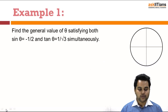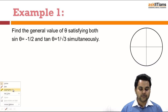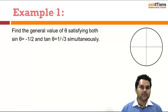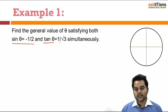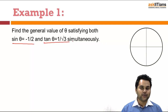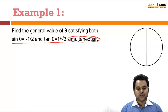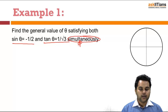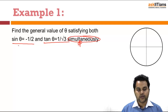Let's start with some examples based on the concepts that we have just learnt. The first example is that we have to find a general value of theta satisfying both the equations sin θ = -1/2 and tan θ = 1/√3 simultaneously. The key point here is that we have to solve the equations simultaneously. We have already learnt the formula for equations when we have to deal with them simultaneously.